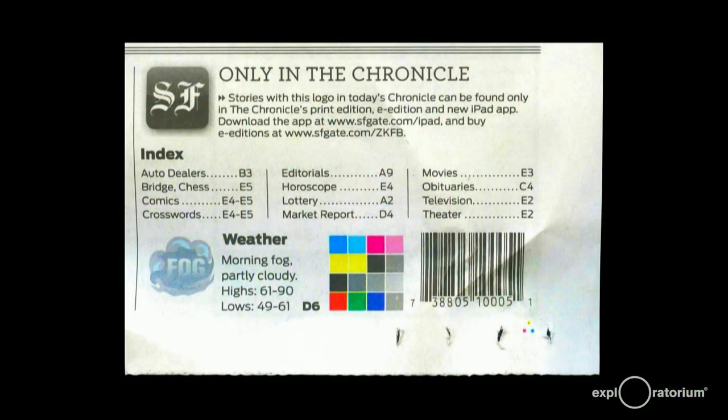A real world example of subtractive color mixing is color printing. Next time you get a newspaper, notice this little square from the front page. See the test colors? Here you see the primaries cyan, magenta, and yellow and the colors that result from mixing them. The printer monitors this array of colors to make sure the printing process produces the correct amount of each color.